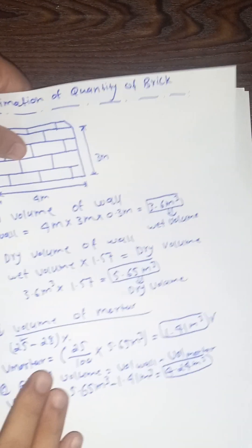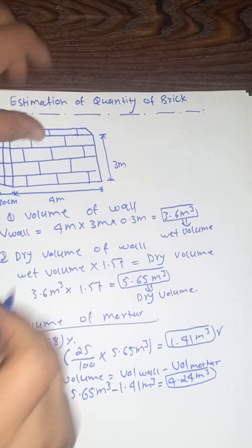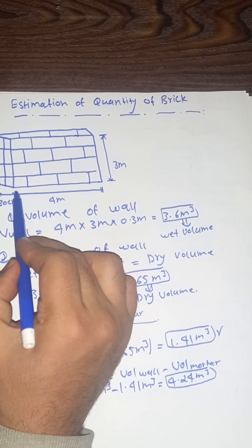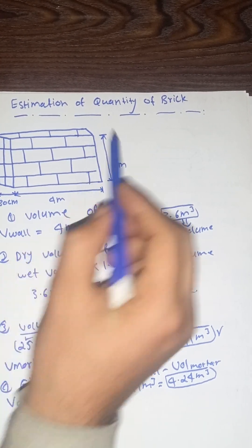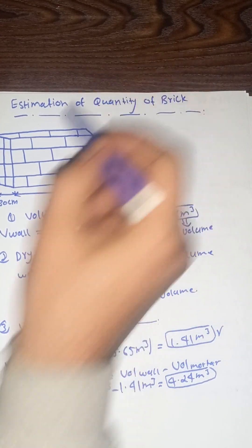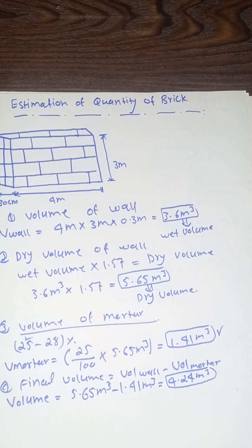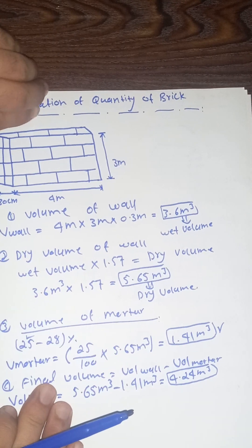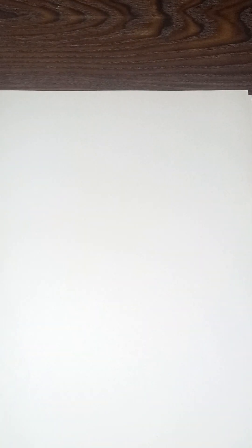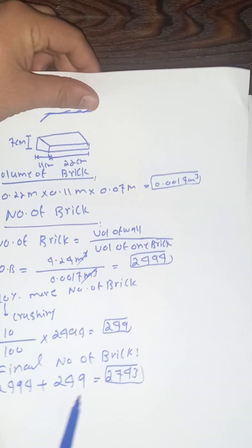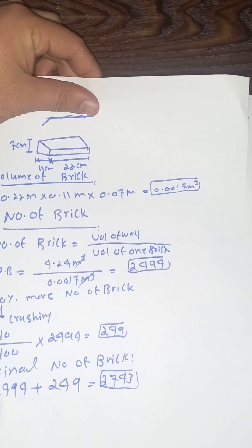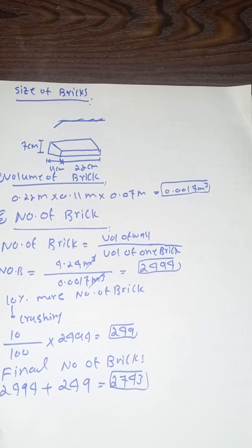So if we have a wall that is 4 meters in length, 3 meters in height, and 30 centimeters in thickness, the number of bricks we need is 2743 bricks.